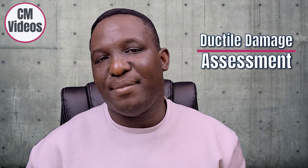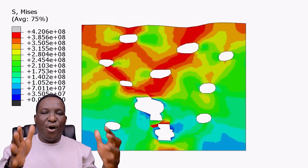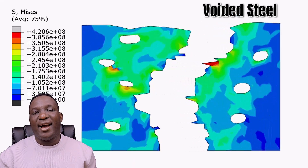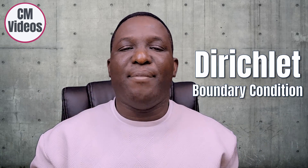This is a quick video showing how to undertake a ductile damage assessment of a representative volume element of a voided steel material. We're going to use a boundary condition type called a Dirichlet boundary condition to impose loading on the model and look at the stress-strain behavior.